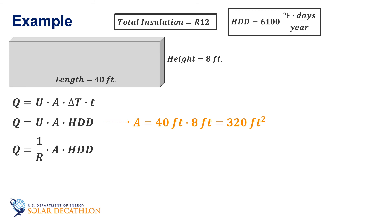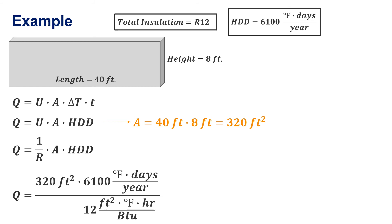Therefore, the heat transfer is 320 square feet times the 6100 degree days. Note the units. Divided by the R value of 12, which also has units, and those units are feet squared degrees Fahrenheit hour over BTU. If you work through the units of each term in this equation, they don't cancel, in particular the time units. So we need to convert days into hours with 24 hours per day in the numerator. With that, the resulting units are BTU, and the answer is 3.9 million BTUs that go through the wall annually.